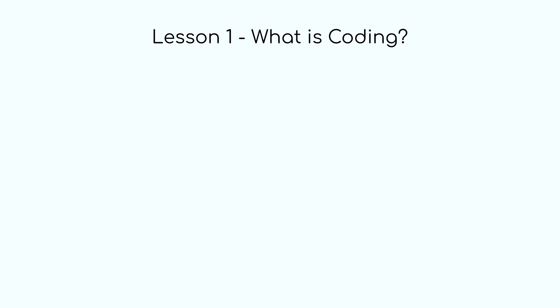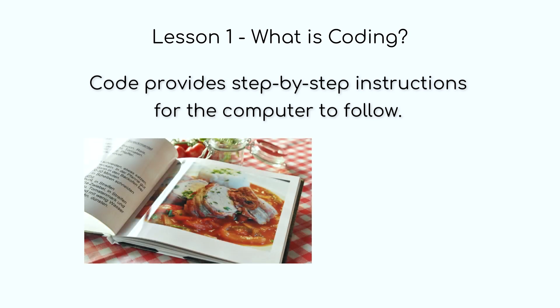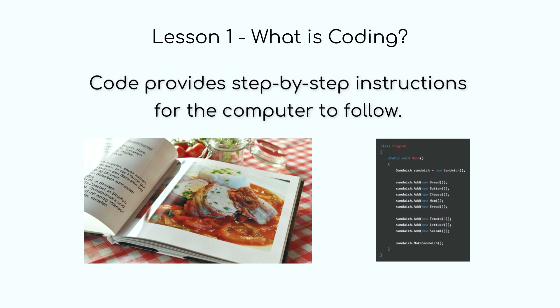So what is code? At its core, code is just a set of instructions that tell a computer what to do. Just like you might give someone a list of steps to follow to make a sandwich, when you write code, you're giving a computer a set of instructions to follow in order to perform specific tasks.